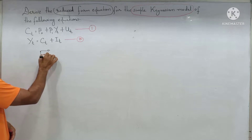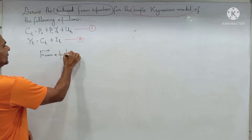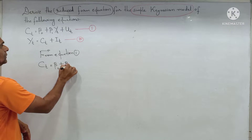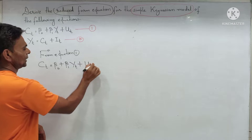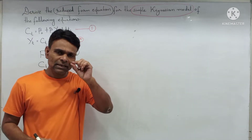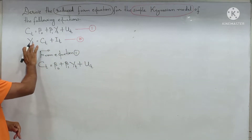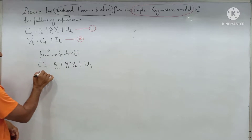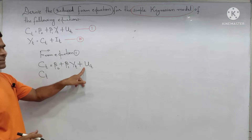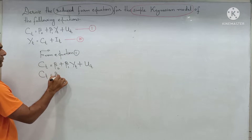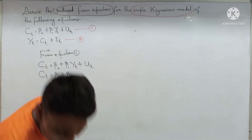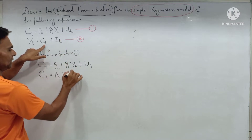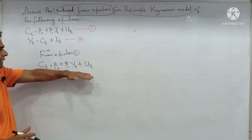First, write down equation number 1 as it is: Ct = beta0 + beta1*Yt + Ut. Now substitute the value of equation number 2. The value given for Yt is Ct plus It. Write it down — just substituting the value of Yt in equation 1. So we write: Ct = beta0 + beta1*(Ct + It) + Ut, substituting the value of equation number 2 into equation 1.